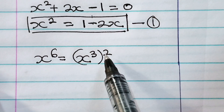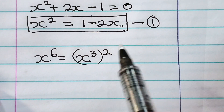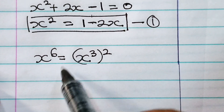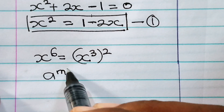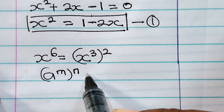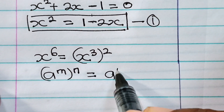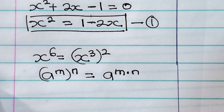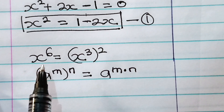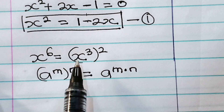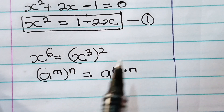In indices or exponents, a to the power of m raised to the power of n is equal to a to the power of m multiplied by n. So x to the power of 6 is equal to x to the power of 3 raised to the power of 2. All we need to do is get the value of x to the power of 3, then square it to get x to the power of 6.